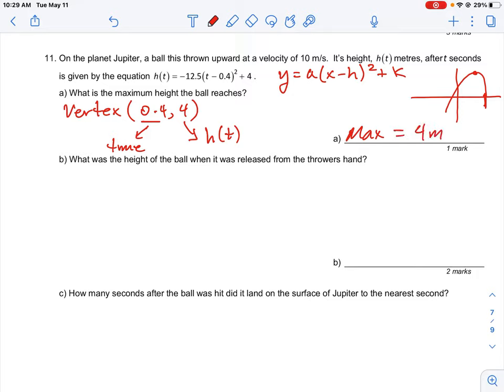That's what we get out of the vertex coordinate. That's simply all that we're looking to do here. Now, question B says, what is the height of the ball when it was released from the thrower's hand? So when the ball is released, what we need to understand is what is the time that corresponds to that? That actual time is equal to t equals 0.